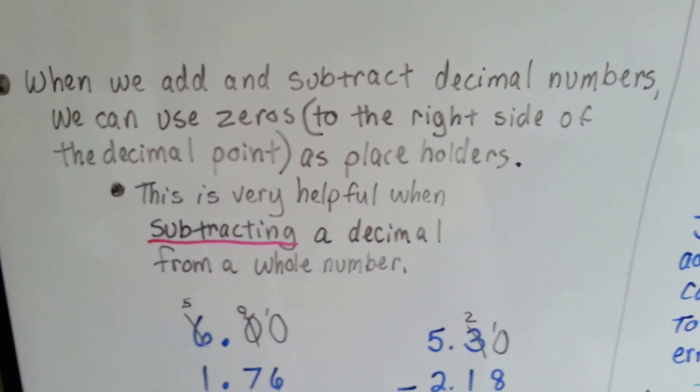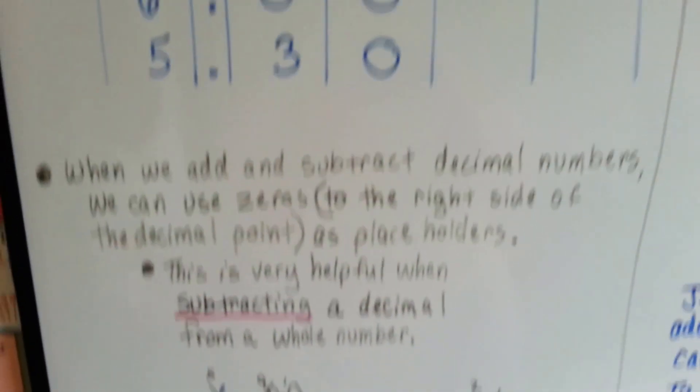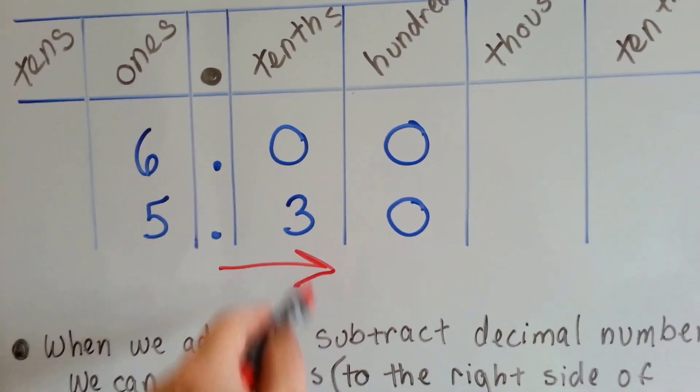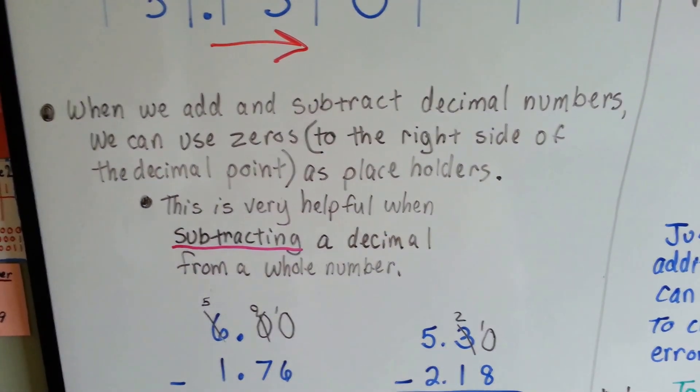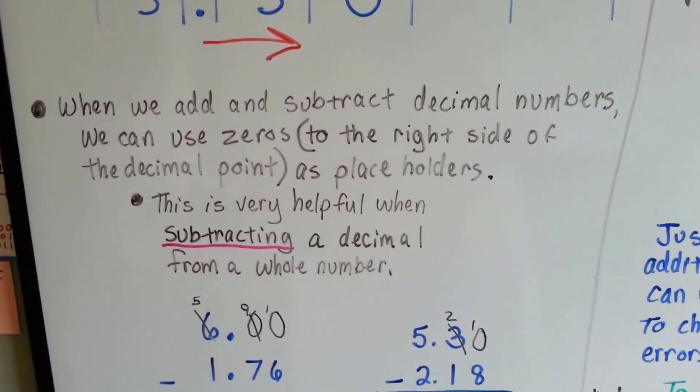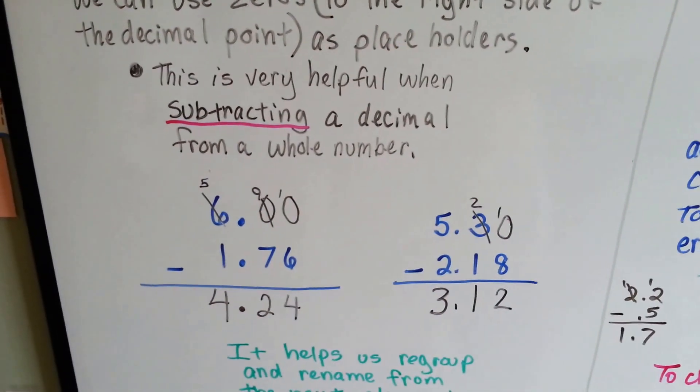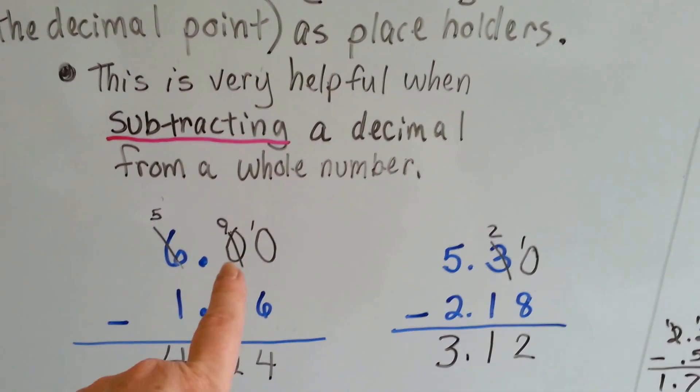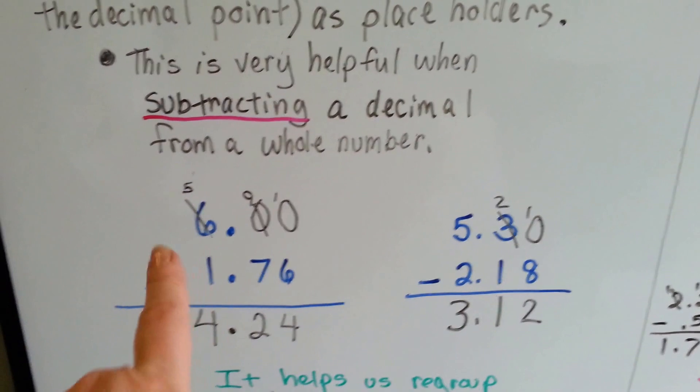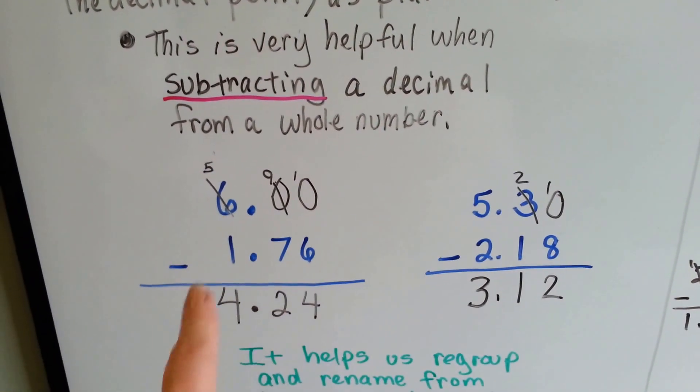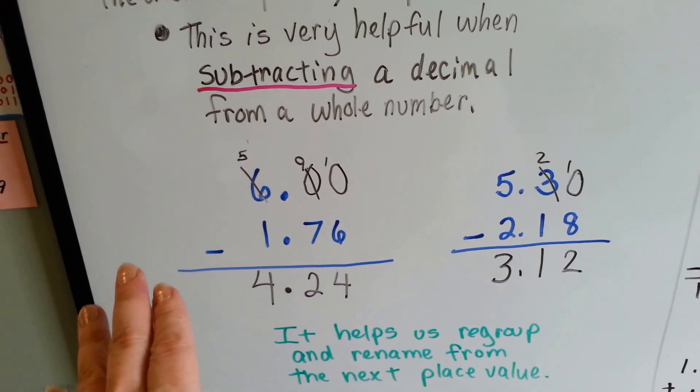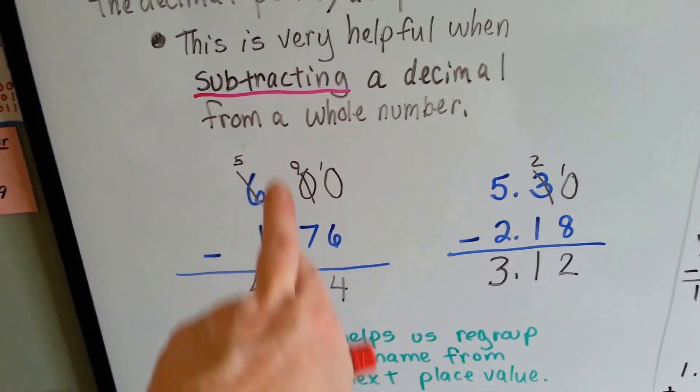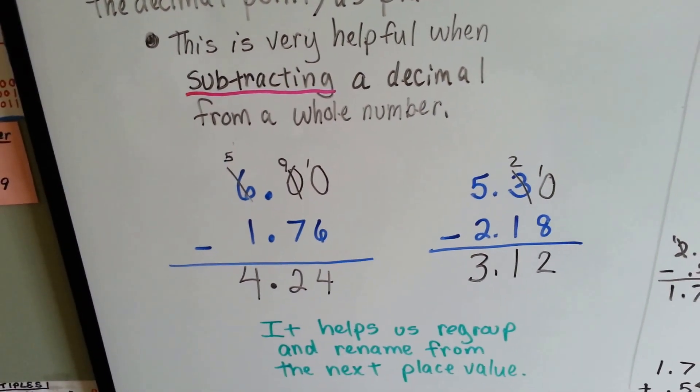So we're going to use zeros as placeholders when we subtract decimals more than anything else. When we add and subtract decimal numbers, we can use zeros to the right side of the decimal point as placeholders. And it's very helpful when subtracting a decimal from a whole number. So if it was just 6 and we had to subtract 1.76, by putting our placeholders there, we now have a number that looks like 600 minus 176. And we do it no different than if the decimals weren't there. We just make sure that they're lined up all nice and pretty and straight and perfect so that we keep our place values in the right place.